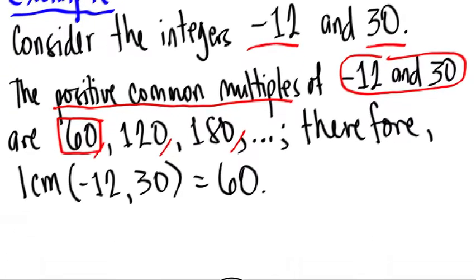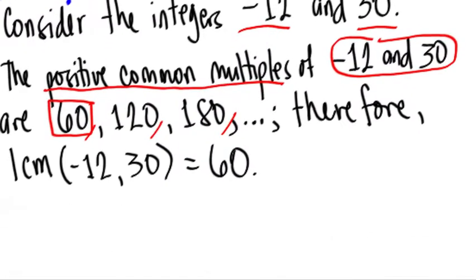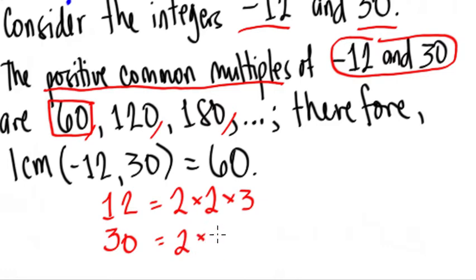If you want the same old way to find this, let's make use of positive 12 instead of negative and then 30. What's the prime factorization of 12? That's 4 times 3, which is 2 times 2 times 3. How about 30? That's 2 times 15, and 15 is 3 times 5.